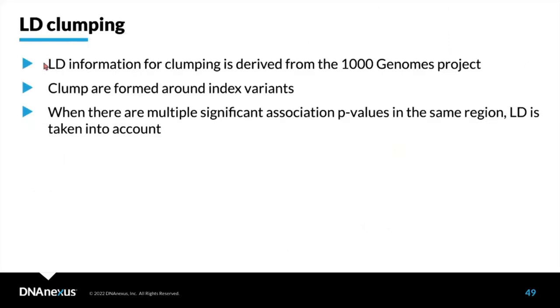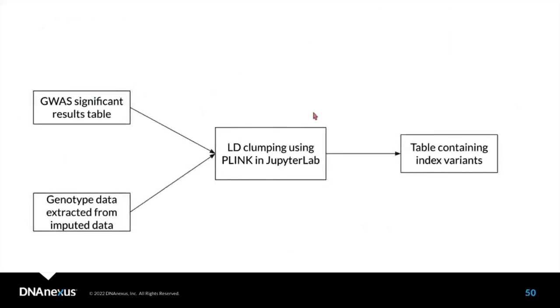LD information was pre-computed by PLINK from the 1000 Genomes Project on the European population, which is appropriate for our analysis since we're using the white British subset from UK Biobank. Inputs include the GWAS significant results table and genotype data extracted from imputed data for each of the 2,500 significant variants. We run Python and bash code in a Jupyter notebook and output a table of index variants for subsequent PheWAS analysis.